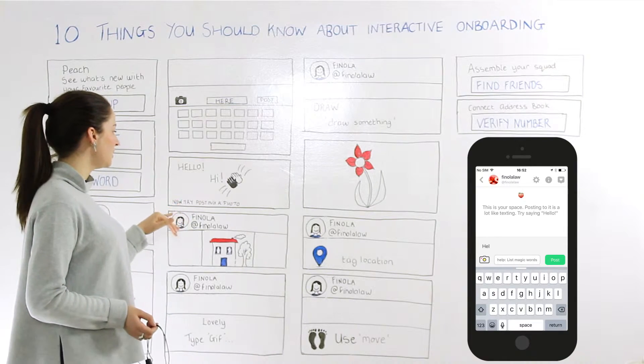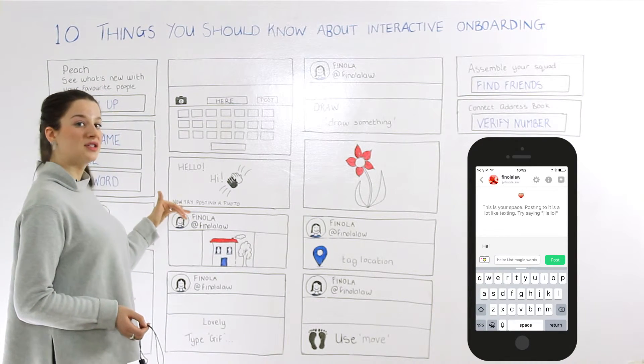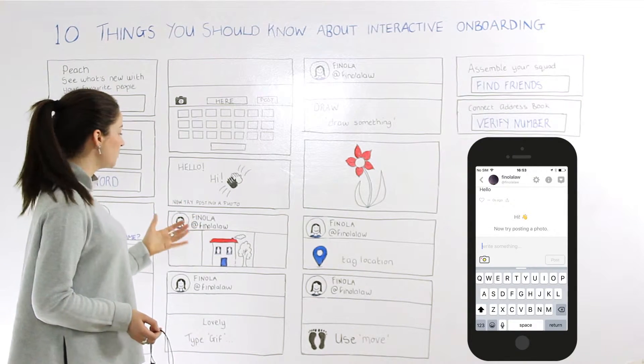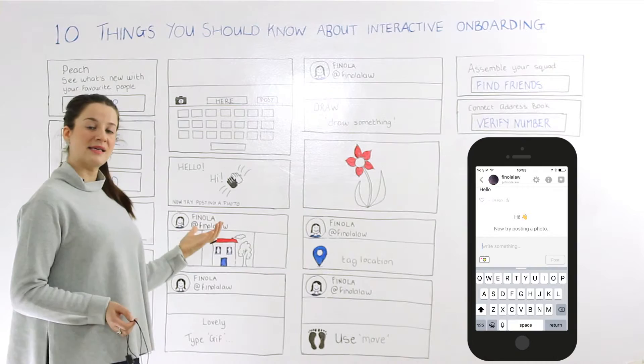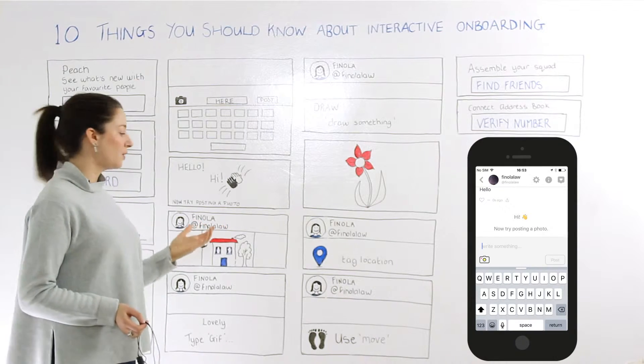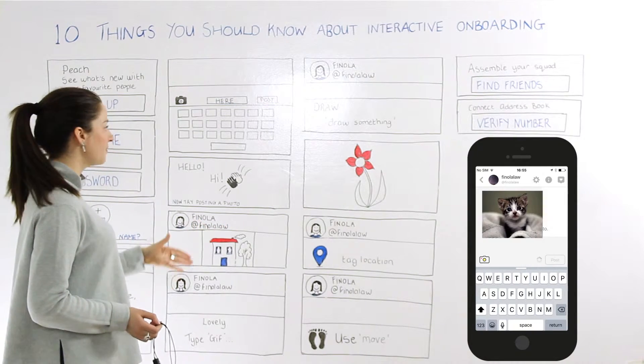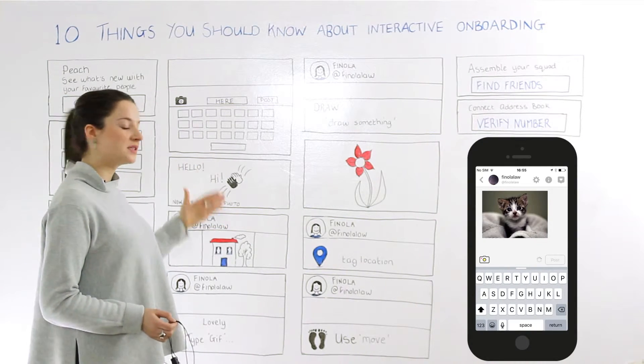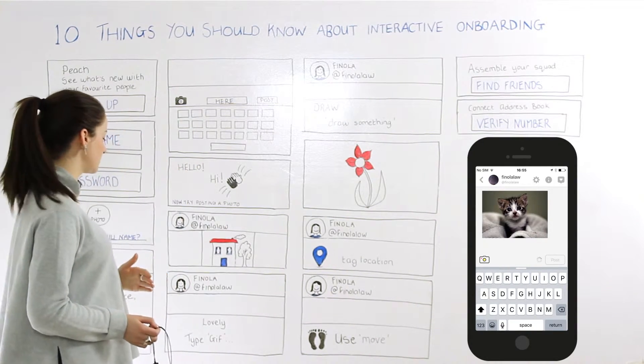As you type hello, they then tell you to try posting a photo. You can access your camera, post a photo, and it comes up in your space — so your space is filling out all the time.